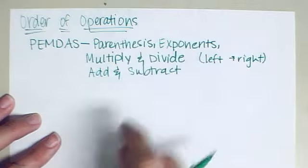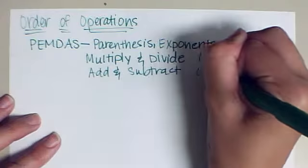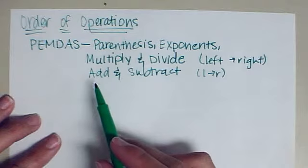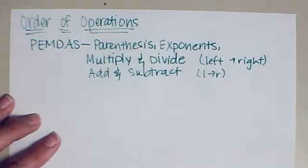The last group is to add and subtract. And you add and subtract after you've followed these other steps. And again, this one moves from left to right. So if you happen to come to subtract first, before add, you do that. If you come to add first, you do that. Every problem won't have all of these types, but many of them will have some form or combination of them.